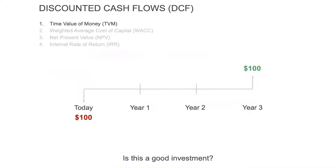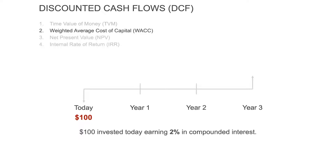Time value of money is the concept that a dollar today is worth more than a dollar three years from now. Let's imagine you invest $100 in an investment that gives you a return of 2% compounded every single year for three years — maybe a simple certificate of deposit. I put $100 in today; one year from now at 2% it'd be worth $102, two years from now $104.04, and three years from now $106.12. It's better than getting nothing — I'm actually getting a 2% return.